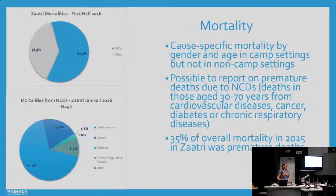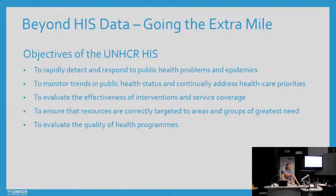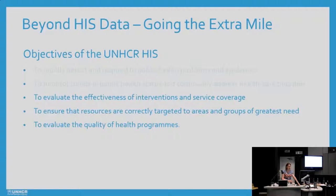We do also collect mortality. One indicator in the global monitoring framework is the risk of dying prematurely — between the ages of 30 and 70 — from one of the four main NCDs. We can't collect this directly from the HIS, but we can calculate that in Zaatari in 2015, 35% of total deaths were premature deaths due to these four main NCDs. The HIS is particularly useful for the first two objectives, but for the last three we need other tools.